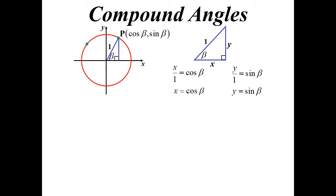I'm now going to pick a point in the second quadrant — it doesn't really matter that it's in the second quadrant, that's just where I've put it. It would have the same coordinates, but in reference to a different angle, called alpha. So we've rotated around the circle alpha degrees or radians. Q would be the point (cos α, sin α). You might think the x-value is negative, but the angle alpha is obtuse, and the cosine of an obtuse angle is negative. So cos α is actually a negative number.